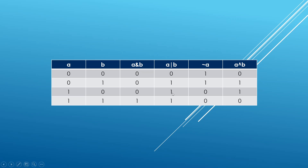OR is really what we have seen before. You're going to get a one if either of the operands is one, and if both operands are zeros you get a zero. The negation operator is going to negate — there is nothing more to explain. If we have a zero we get a one; if we have a one we get a zero.